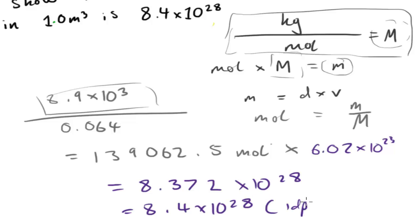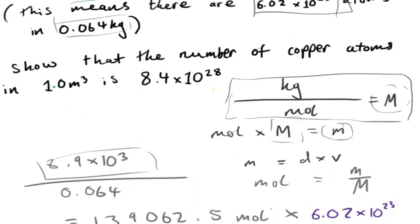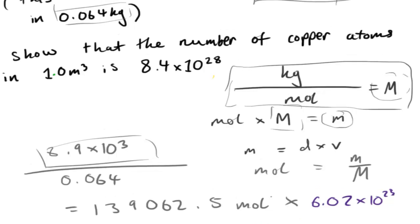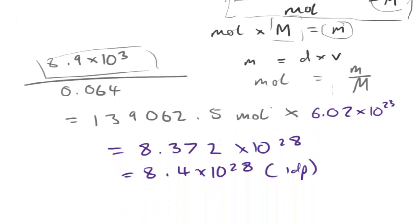So as you can see, I've now worked out that I've now shown that the number of copper atoms in this volume is 8.4 times 10 to the 28. So yeah, I hope you guys found this video helpful. If you've got any questions about it, just ask me in the comments. And yeah, I'll see you guys in the next video.